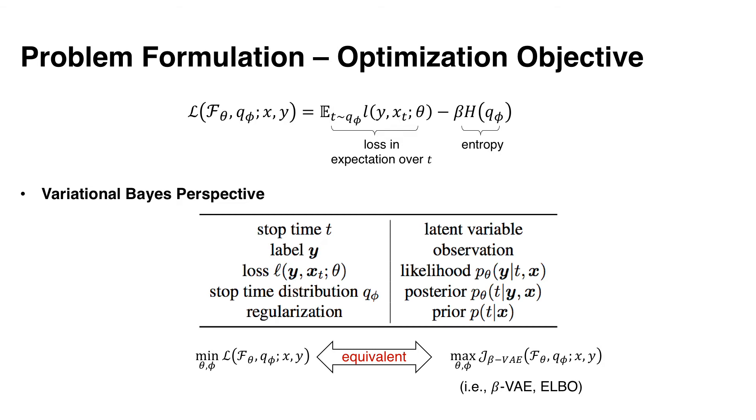In this paper, we present a variational Bayes perspective of this objective. More precisely, we can view the stop-time t as a latent variable in the graphical model. And the label y is the observation. The essence of Bayes framework is to estimate the posterior, that is the probability of the stop-time t given the observation y. We can actually show that if the loss is negative log likelihood and the prior is set to be uniform distribution, then minimizing the joint objective is equivalent to maximizing the beta-VAE objective. If you are not familiar with beta-VAE, it is actually the same as the evidence lower bound, ELBO, if you take beta equals to 1. This variational Bayes perspective helps us better decide and understand the training algorithm.